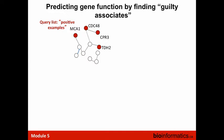I've told you about networks, combining networks together, and how to weight contributions from different networks either automatically or based on your query list. So now, once you have the network, how do we find the guilty associates of a gene — which genes are most heavily associated with the query list we put in?